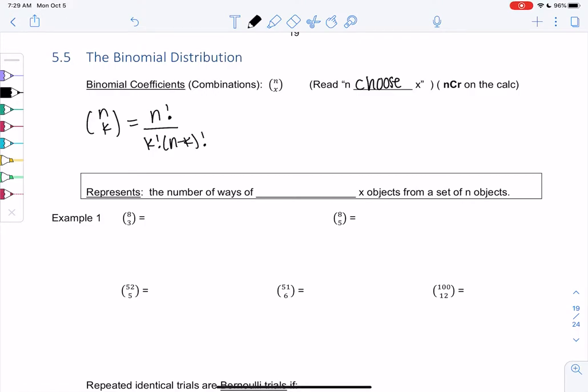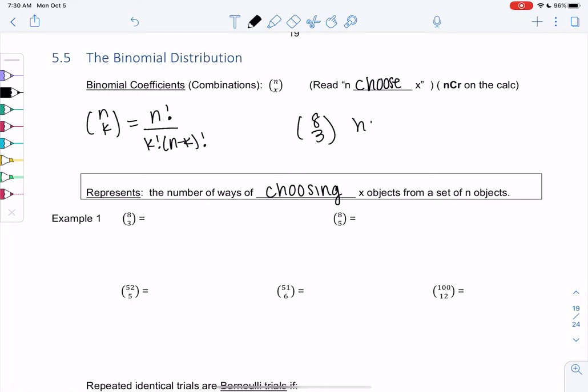It's n factorial over k factorial and n minus k factorial. Factorials, just to learn something new, like 4 factorial means 4 times 3 times 2 times 1. It's like this multiplication process, if you're curious. But again, we'll let the calculator do it for us. So it's going to tell us groups. So it's the number of ways of choosing x objects from a set of n objects. So the first one that says 8 choose 3 is how many groups of 3 we can make out of 8.